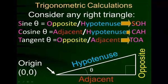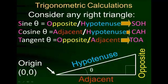Hopefully you know the little mnemonic SOH CAH TOA. Notice how it works: the S, O, and H; the C, A, and H; the T, O, and A have to do with particular things. The first letter is always the trig function of the angle — sine, cosine, or tangent. The next letter is what's in the numerator of a fraction, and the third letter is what's in the denominator. That's what SOH CAH TOA tells us.